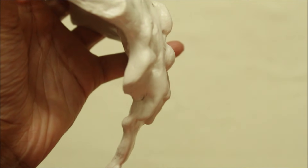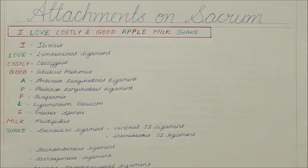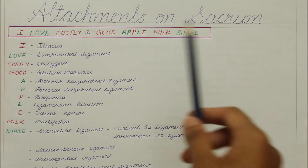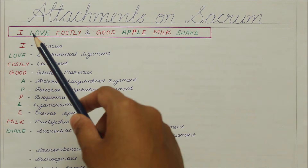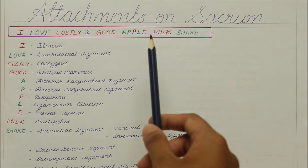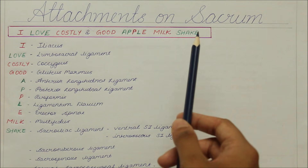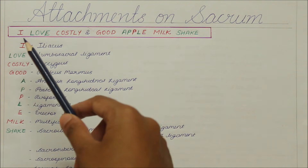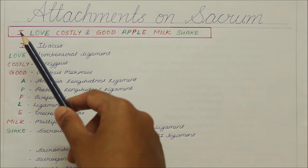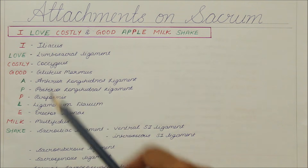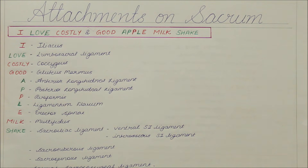Now let's look at an easy way to remember the attachments on the sacrum. The mnemonic used here is 'I Love Costly And Good Apple Milkshake.' The red color symbolizes the origin of muscles and the green represents the attachments of ligaments.